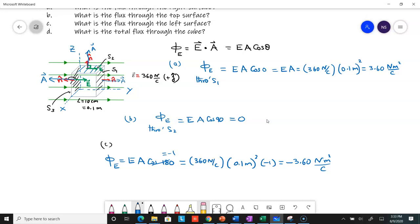For part D, we can see that the only nonzero flux comes from the right face and the left face. We showed flux through the top face is zero. Same reason: flux through the bottom face is also zero because the normal vector points downward.